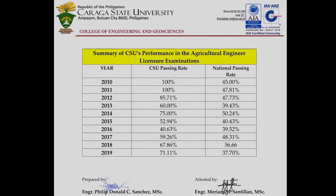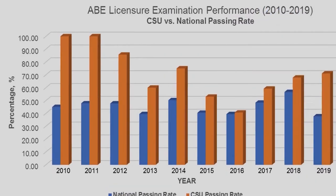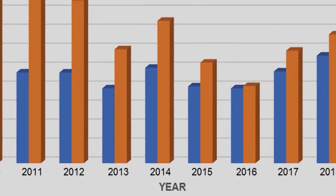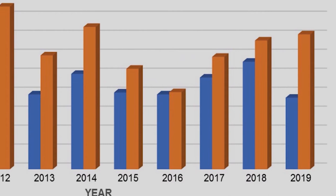Moreover, the performance of the CSU Agricultural and Biosystems Engineering in the licensure exam is consistently above the national passing score from 2010 to 2019.